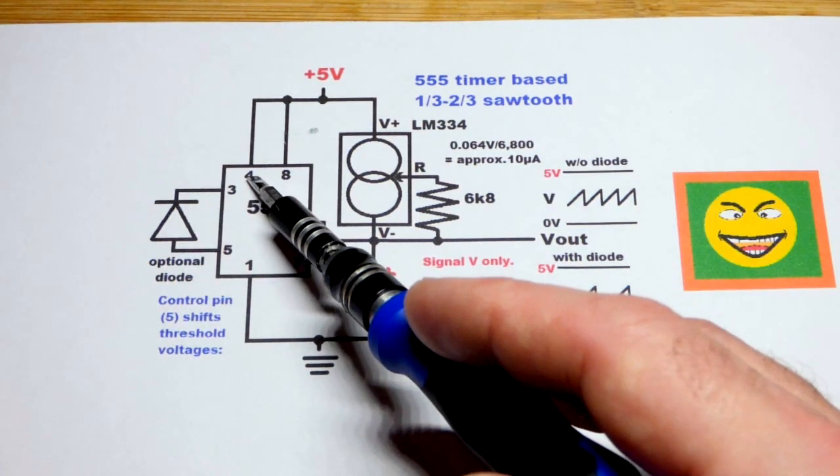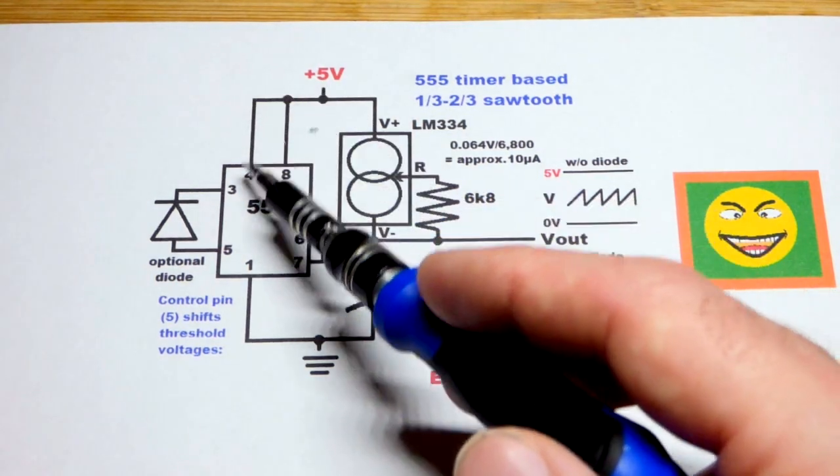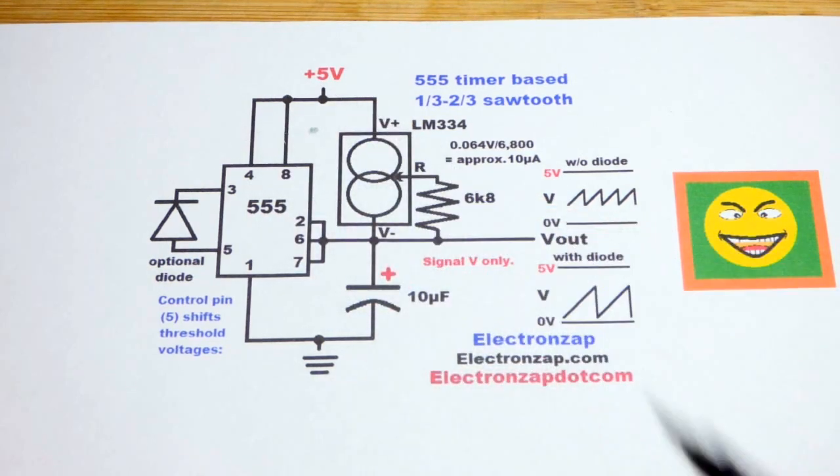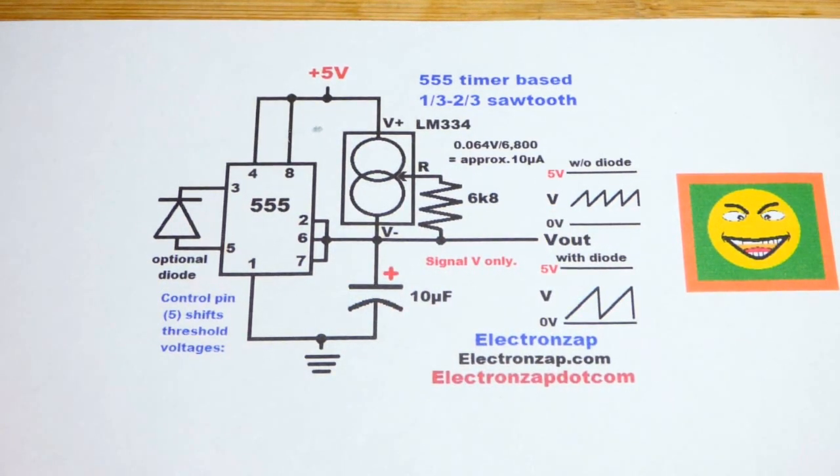Also, the mistake I made was I had pin 5 going to the positive supply instead of pin 4. Pin 4 is the reset pin that goes to the positive supply. That was a big enough mistake that I figured I would remake the video.